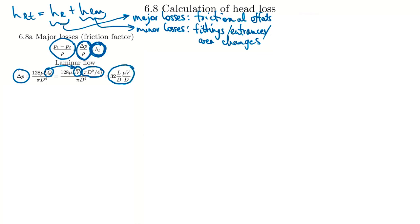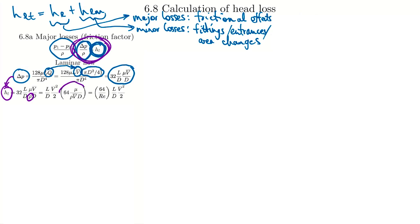Substituting velocity times area for volumetric flow rate and simplifying, we get an expression where we can pull out a Reynolds number grouping. After rearranging, the head loss for laminar flow is directly a function of Reynolds number, the length L of the piping, the velocity of the flow, and the diameter of the pipe — and we can calculate it directly. For turbulent flow, we can't get an analytical solution, so we use dimensional analysis from section 5.